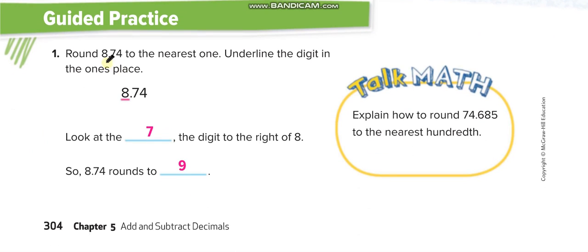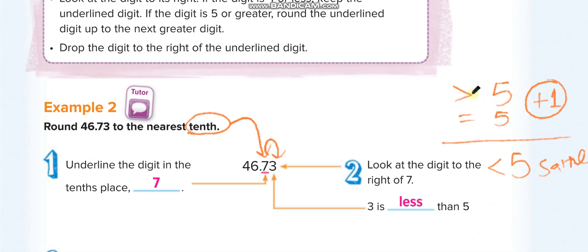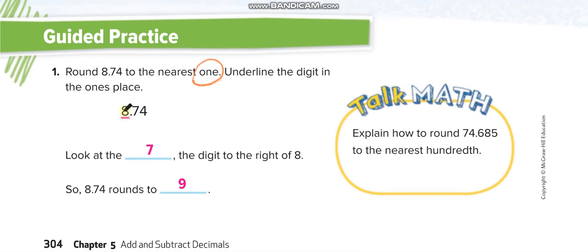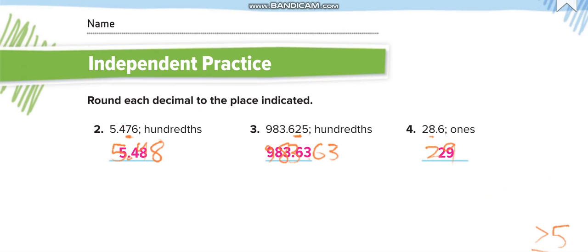Next, they say round to the nearest one. First, underline the ones place, then check the next number — it is more than five this time. So we add one to the underlined digit. We add one to 8, and it becomes 9. The next number is 7, which is more than five, so we make the 8 a 9. You can write it as 9.00 or just 9.